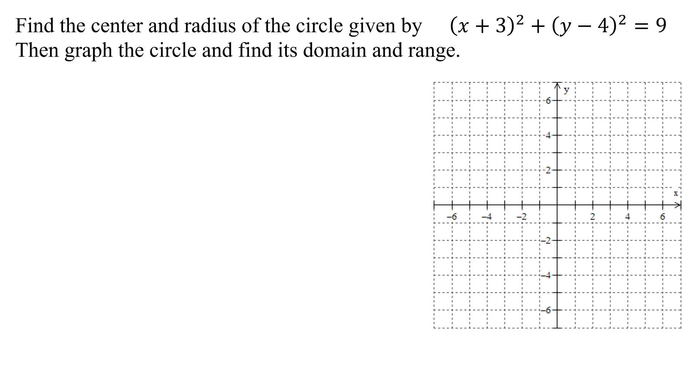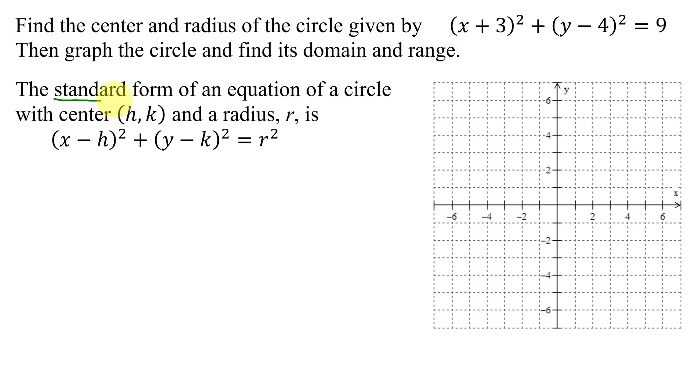So quickly reviewing, the standard form of an equation of a circle with the center at (h, k) and a radius r is given by (x - h)² + (y - k)² = r².